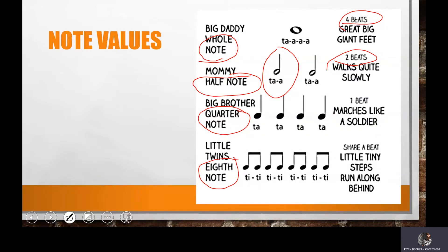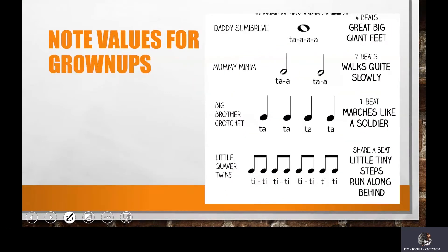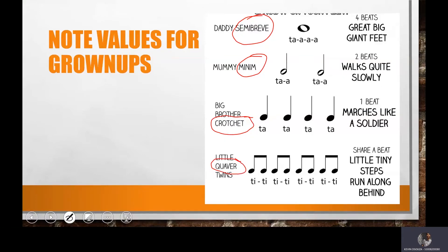So that was four beats, two beats, one beat, and half a beat. It was written as 'share a beat' — why is it written as share a beat? These are all stuff from Google. Moving next, we have note values for grownups. One more time for all my wonderful batch mates, I will highlight the important stuff. So we have got semi-breve, minim, crotchet, and quavers.